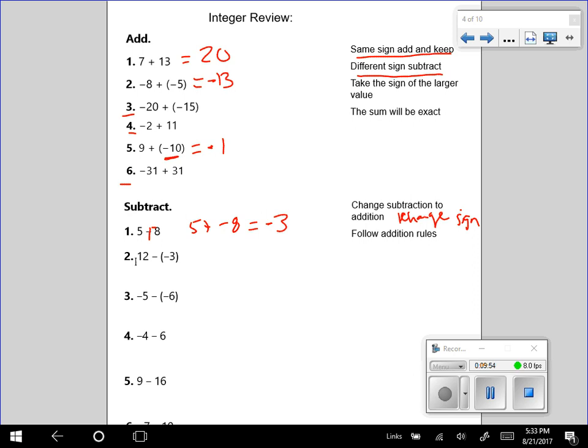For 2, I have 12 minus negative 3. I'm going to change subtraction to addition. When I do that, I'm going to change the sign of the next number. So I have 12 plus positive 3. Now I have the same sign. Add and keep. Nice and easy. That's 15.